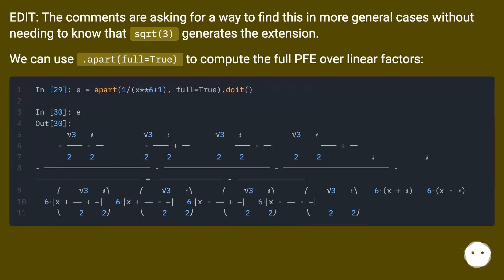Edit: The comments are asking for a way to find this in more general cases without needing to know that sqrt(3) generates the extension. We can use .apart(full=True) to compute the full PFE over linear factors.